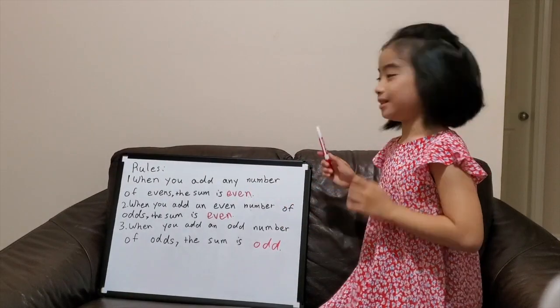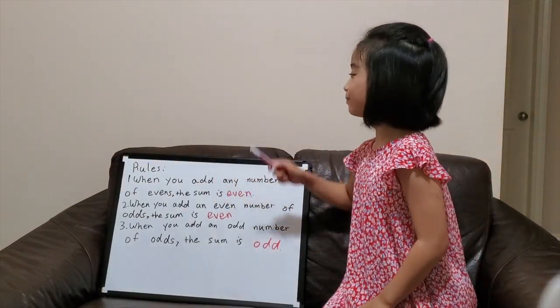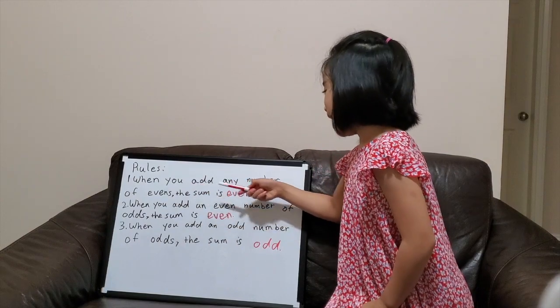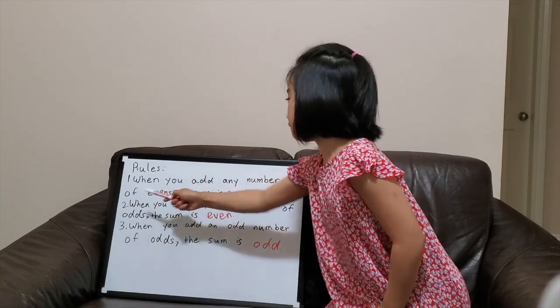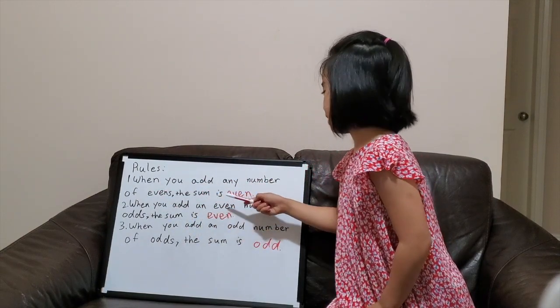Now, let's summarize the rules. When you add any number of evens, the sum is even.